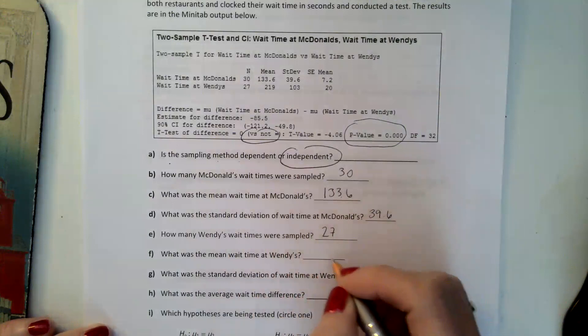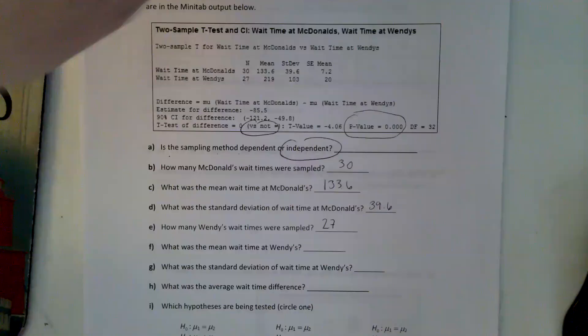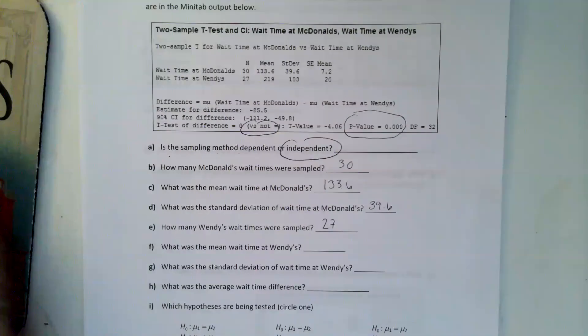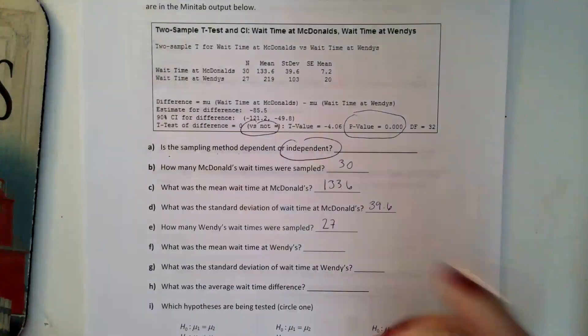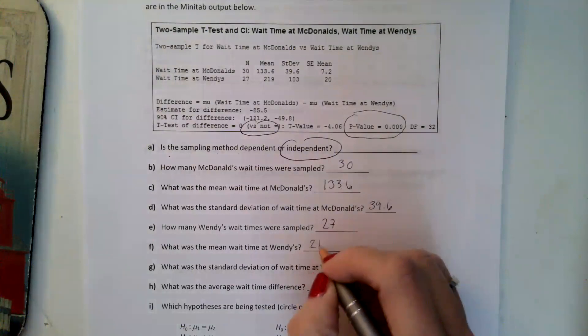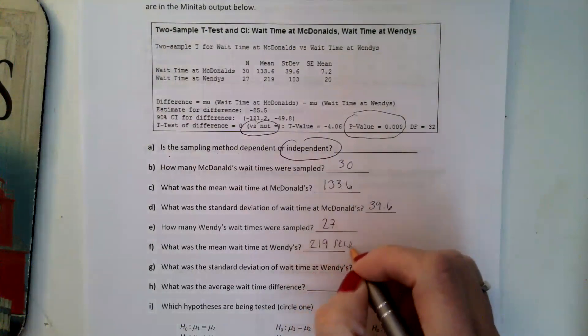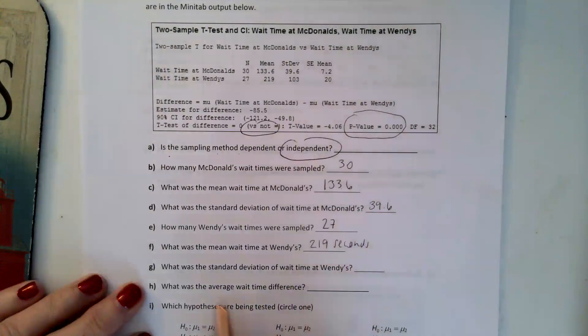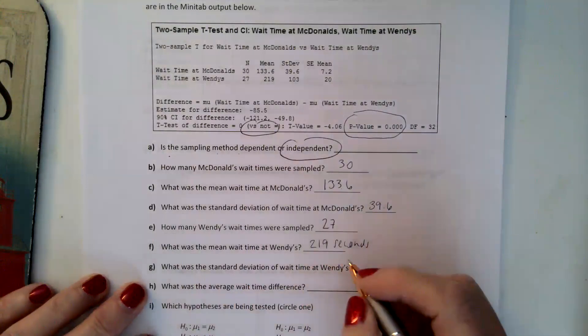How many Wendy's wait times were sampled? 27. What was the mean wait time at Wendy's? And that was 219. And remember, this is seconds that they had to wait, so that's just over three minutes. What was the standard deviation of wait time at Wendy's? And that was 103.